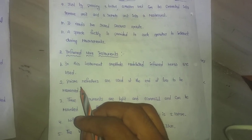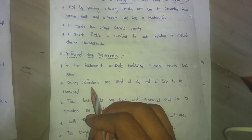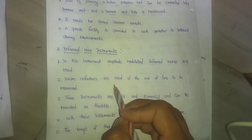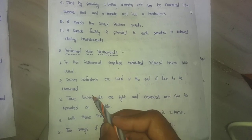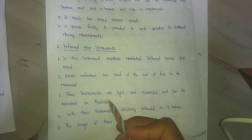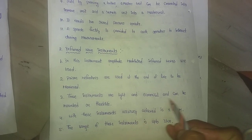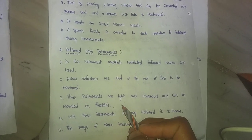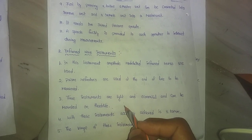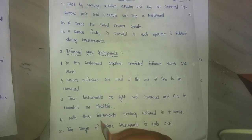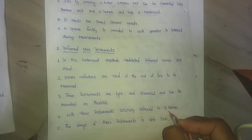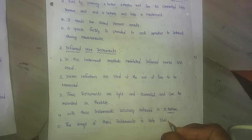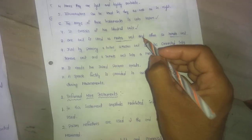The process involves wavelength, speed and time taken, and velocity. Prism reflectors are usually placed at the end of the line to be measured. These instruments are light and economical and can be mounted on a theodolite. The accuracy is plus or minus 10 mm, and the range of these instruments is up to three kilometers.